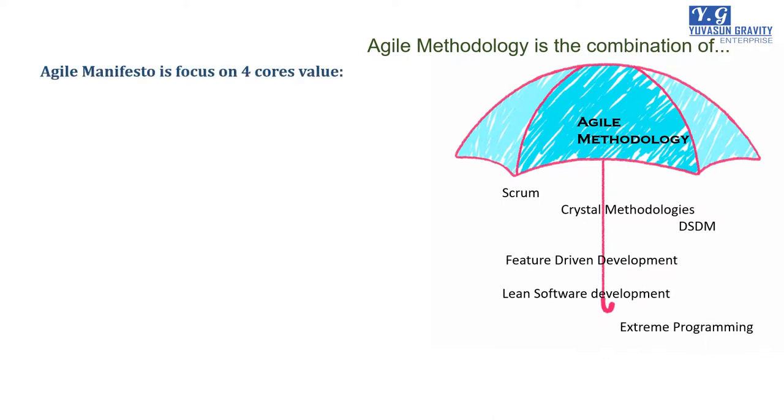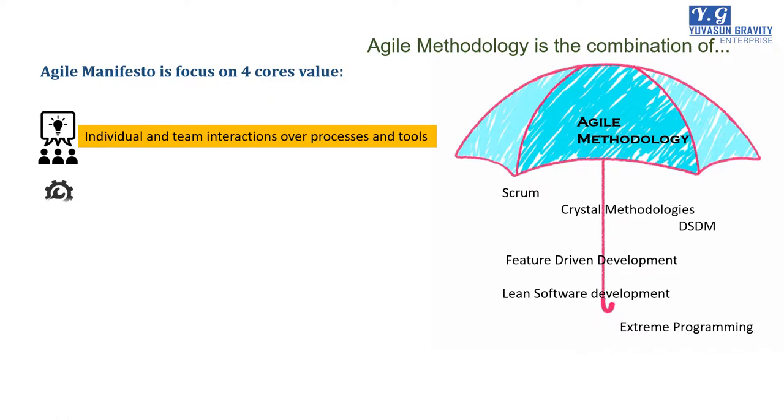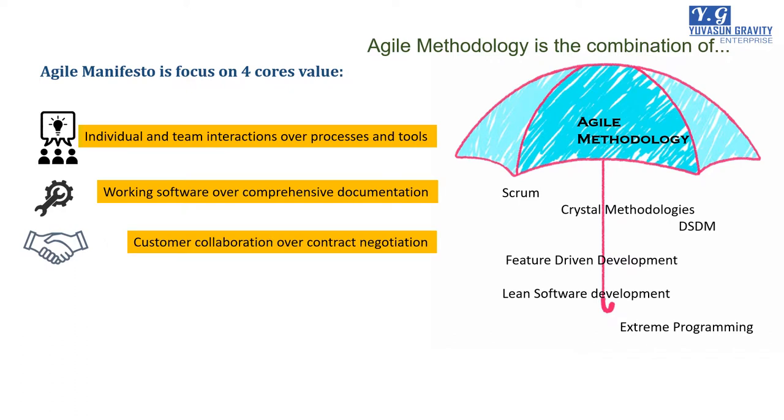Agile Manifesto is focused on four core values. First, individuals and team interactions over processes and tools. Second, working software over comprehensive documentation. Third, customer collaboration over contract negotiation. Fourth, responding to change over following a plan.